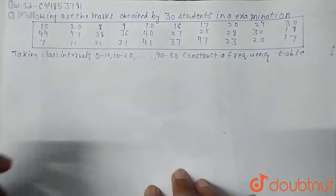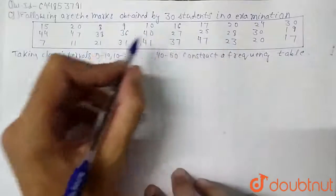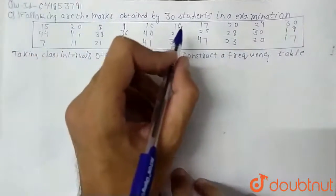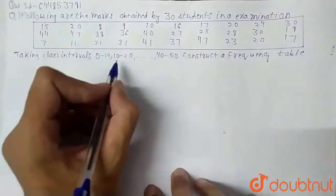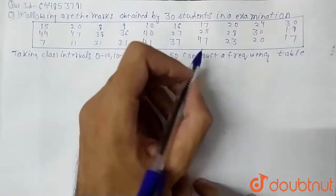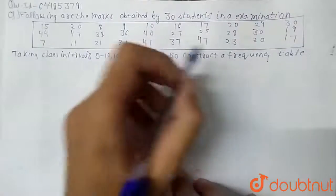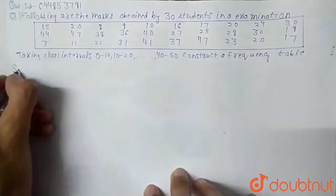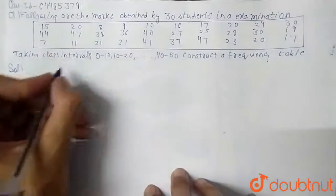So in this question, they are given the marks obtained by 30 students in exam and they are given that taking class intervals 0 to 10 to 40 to 50, then we have to draw a frequency table. So now for this, first we will write the class interval.